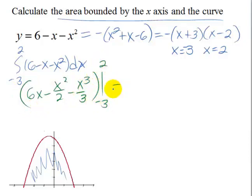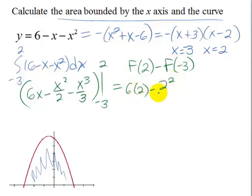So that's going to be F of 2 minus F of negative 3. So it looks like we've got 6 times 2 minus 2 squared over 2 minus 2 cubed over 3.